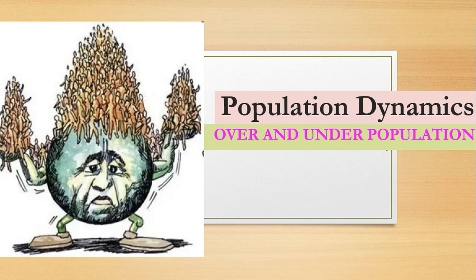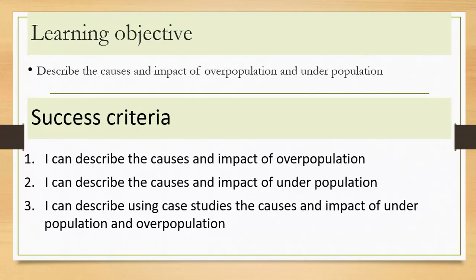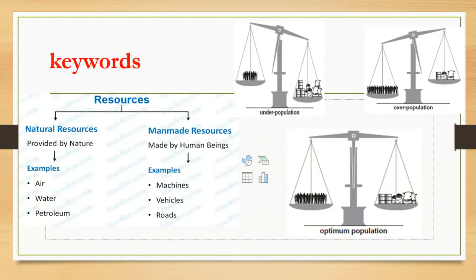In this third lesson, we're going to look at population dynamics — specifically over population and under population. The learning objective is to describe the causes and impact of over population and under population. The major aspects we will focus on are causes and impacts of both.